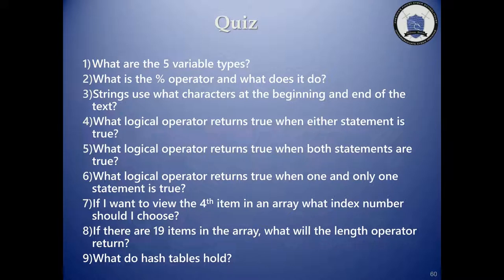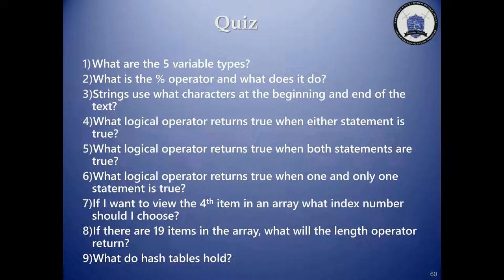Question seven: if I want to view the fourth item in an array, what index number should I choose? Index three would give you the fourth item — remember, indexes start at zero. Question eight: if there are 19 items in the array, what will the length operator return? It will return 19, because the length operator returns the number of items in the array.